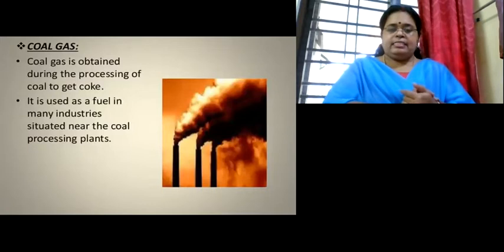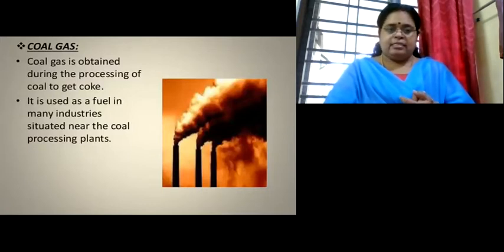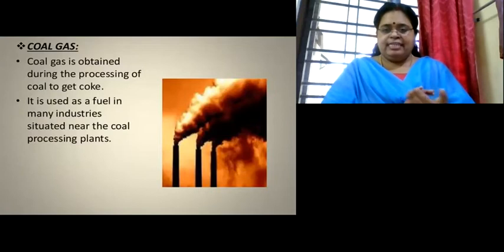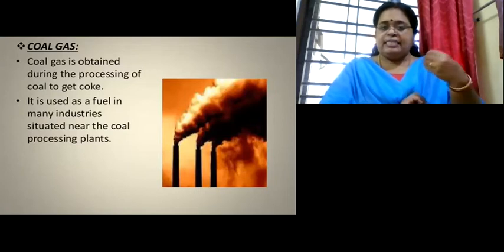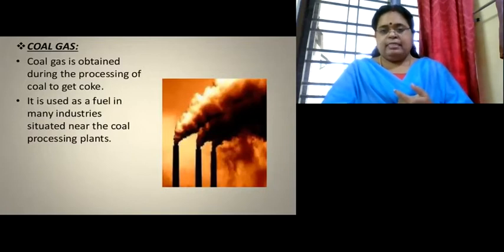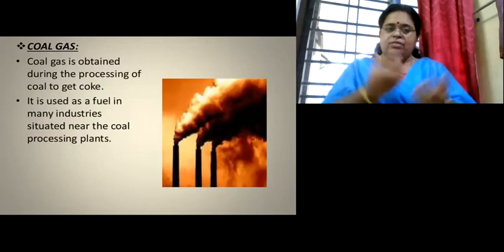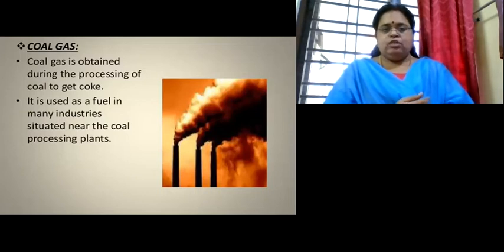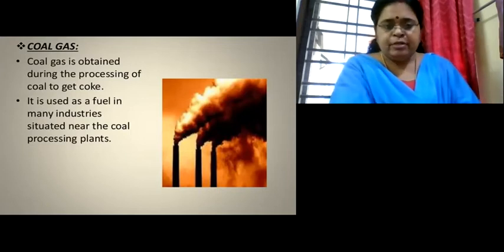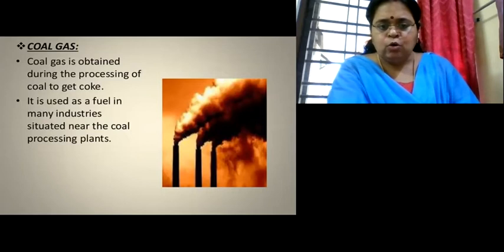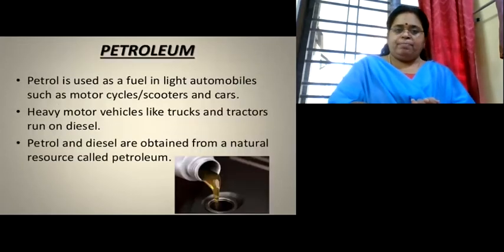The next substance is coal gas. When coal is processed to obtain coke in factories, a gas is released — that is called coal gas. So coal gas is obtained during the processing of coal to get coke. This coal gas is also used as a fuel in many industries situated near the coal plants. None of what is obtained from coal is wasted — everything is used up.